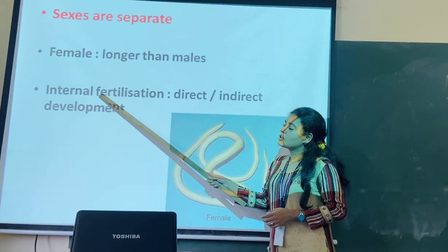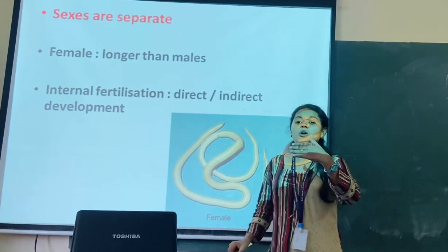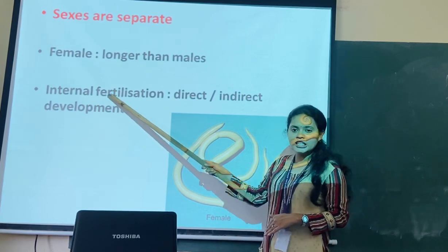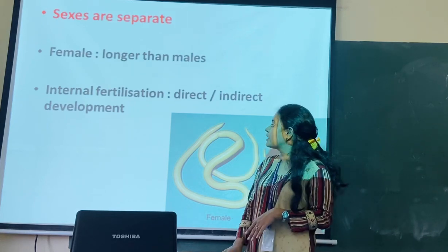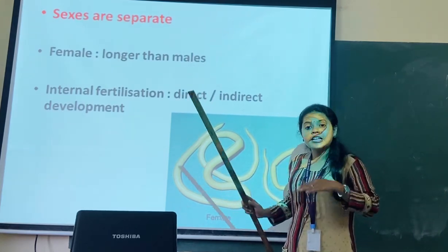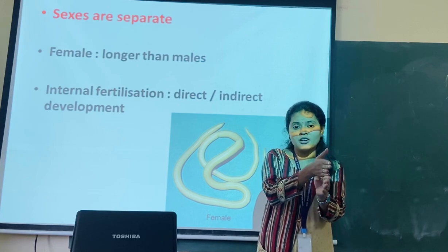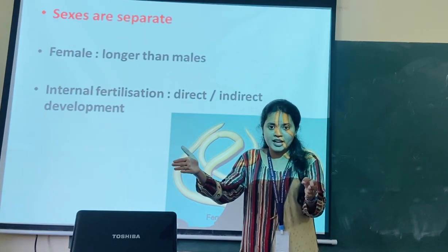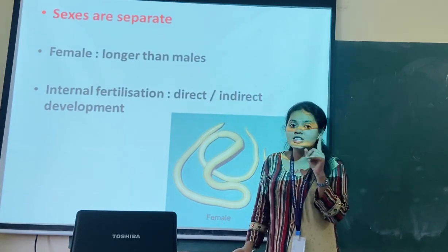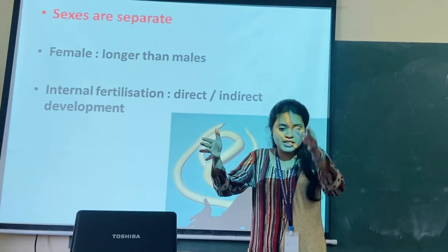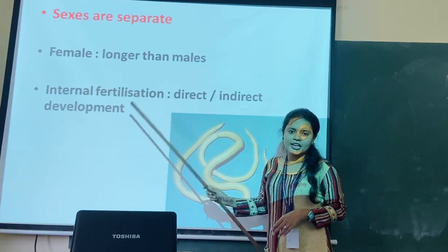Fertilization is internal, meaning the zygote develops inside the body of the organism - the fusion of gametes takes place inside. Development can be direct or indirect: direct means the young ones resemble the adult, while indirect means there are larval stages in between the young ones and the adult form.